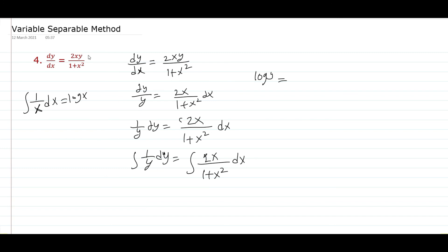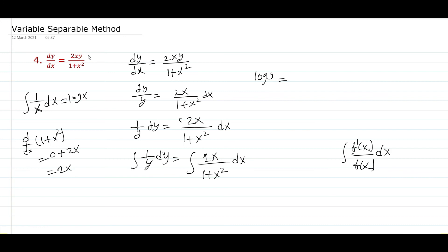The derivative of (1 plus x square) is 2x, and this is exactly the numerator. Using the formula: if the derivative of the denominator is in the numerator, then the integral equals log of the denominator. So the right side becomes log of (1 plus x square). Therefore, log y equals log (1 plus x square) plus c. Thank you for watching my video.